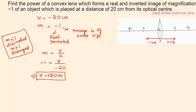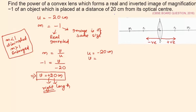So v comes to be plus 20 centimeter. It means that the image is formed towards the right — the image is formed on the right side of the optical center at a distance of 20 centimeter. So our image distance is plus 20 centimeter. Notice that object distance was minus 20 centimeter and image distance is plus 20 centimeter — the object distance is the same magnitude as the image distance, which means the object is situated at the center of curvature, or 2f.